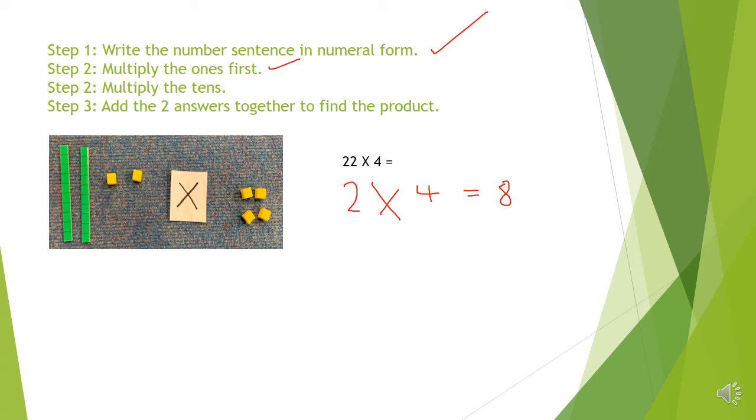The next step is to multiply the tens. I've only got two tens deans here, which means I've got 10, 20. I haven't got any tens deans in this side of my calculation. So it is 20 times by 1, 2, 3, 4.